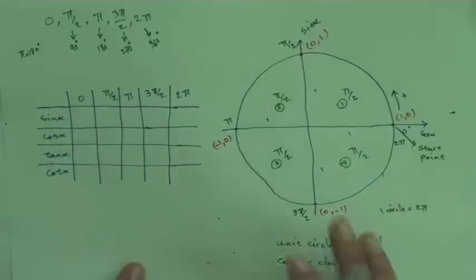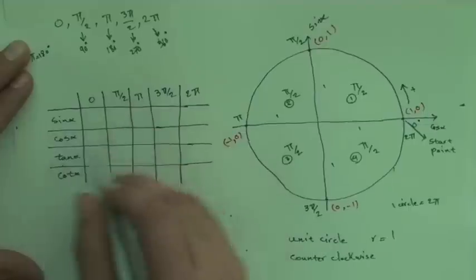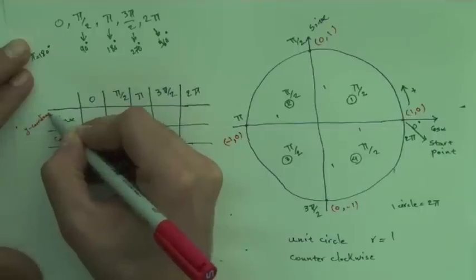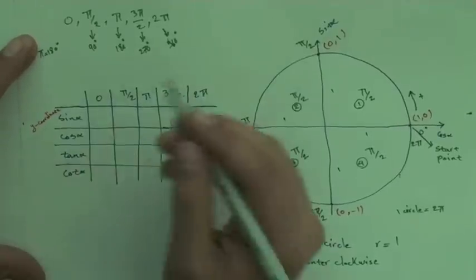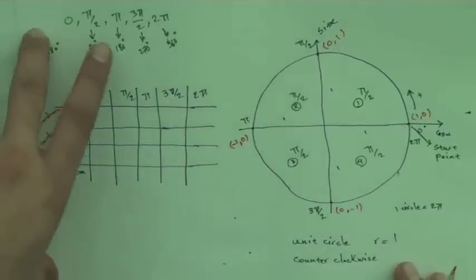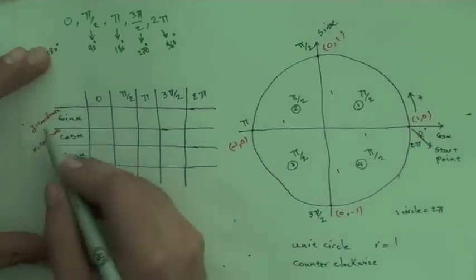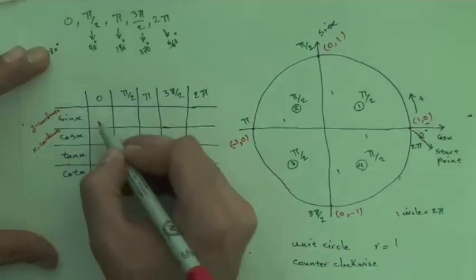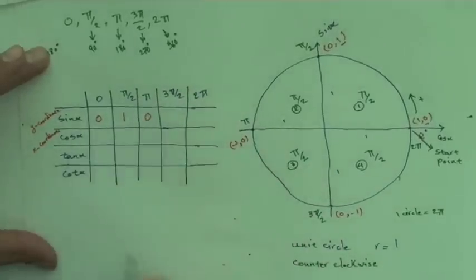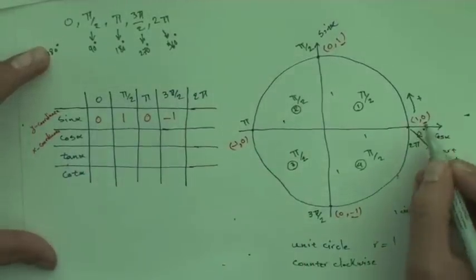For sine, we work with the y-coordinate. Sine(0): the y-coordinate at 0 is 0. Sine(π/2): y-coordinate is 1. Sine(π): y-coordinate is 0. Sine(3π/2): y-coordinate is −1. Sine(2π): y-coordinate is 0 again. Not bad!